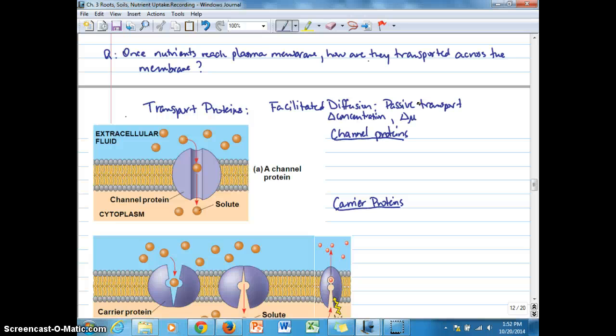You can see from the diagram here that same idea where there's a higher concentration of some kind of solute on this side of the membrane, and it's moving in the direction of where the concentration is lower through a channel protein.